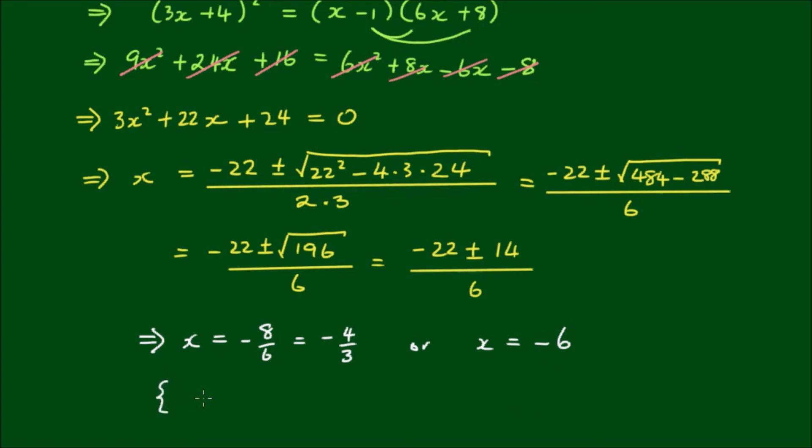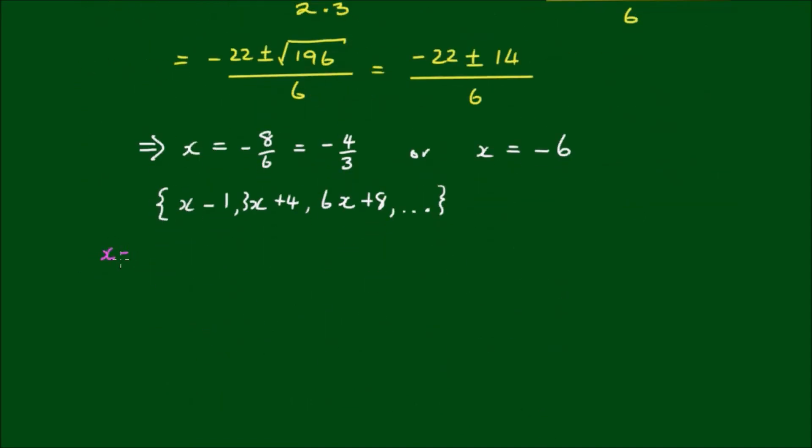Okay, so we have two possible values for x which may satisfy the progression x minus 1, 3x plus 4, and 6x plus 8. What we need to do now is to test both values to see which value of x does indeed form a geometric progression. Okay, so let's try x equals negative 4 thirds. So if we substitute negative 4 thirds for each instance of x, we have negative 4 thirds minus 1, 3 by negative 4 thirds plus 4, 6 by negative 4 thirds plus 8. So the first term simplifies to negative 7 thirds. The second term simplifies to 0.